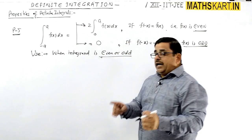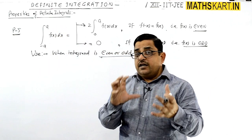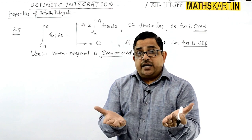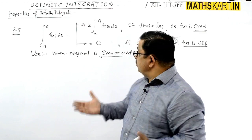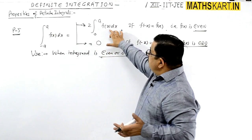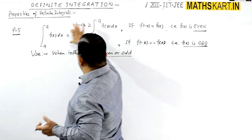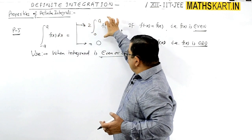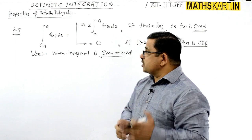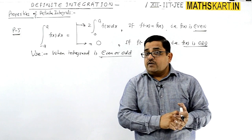When we check the portion which is to be integrated, that is known as the integrand. If we see that it is odd, then we get directly a value of 0. If it is even, then it will double. We simplify this part and then solve it. The main use is this — you have to check whether the integrand value is even or odd.